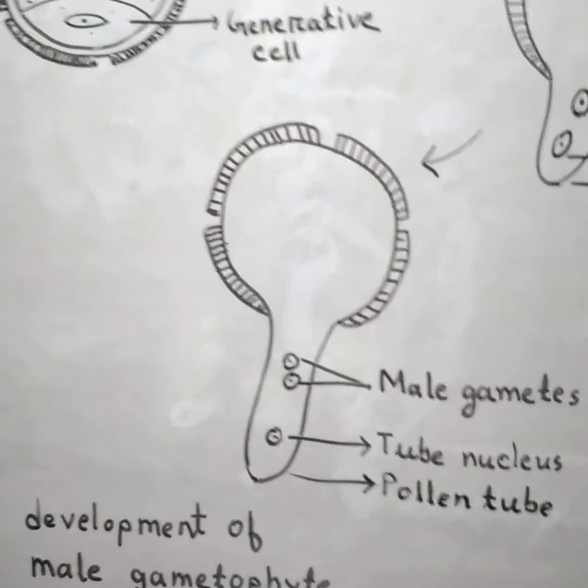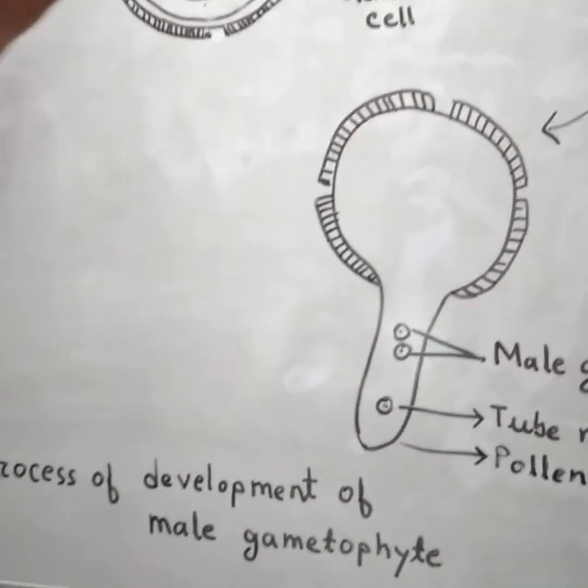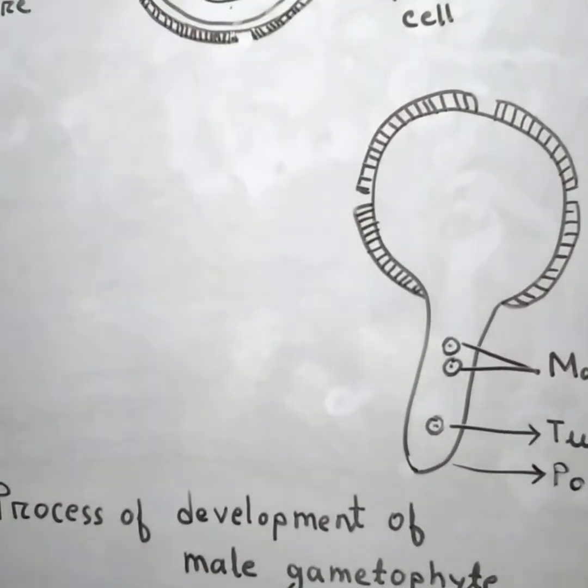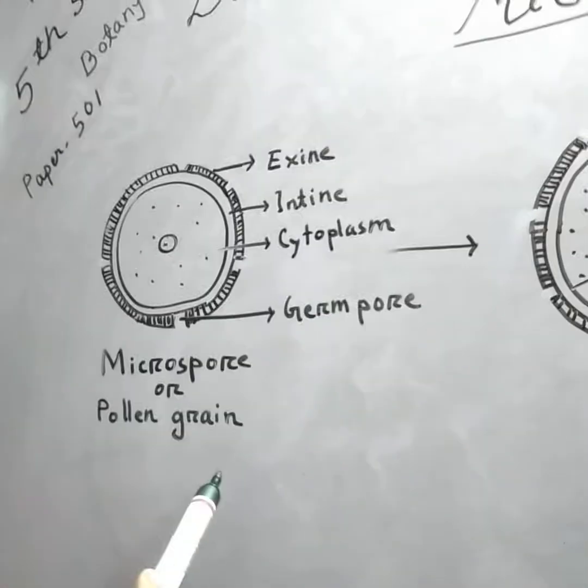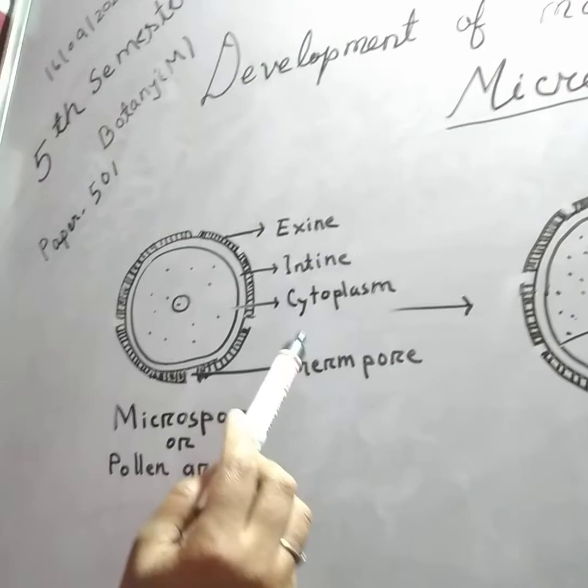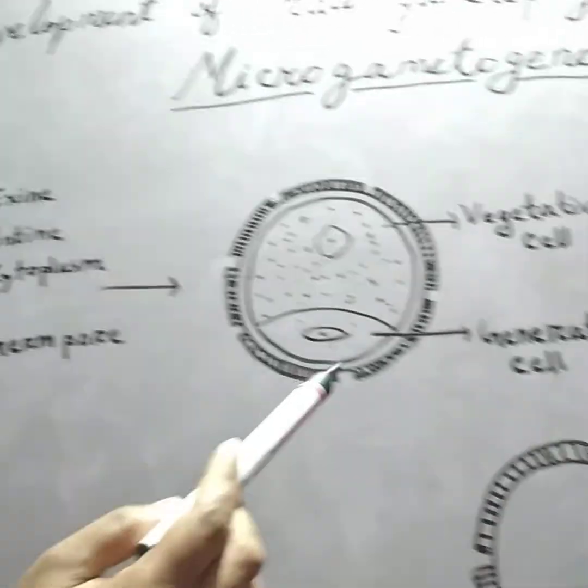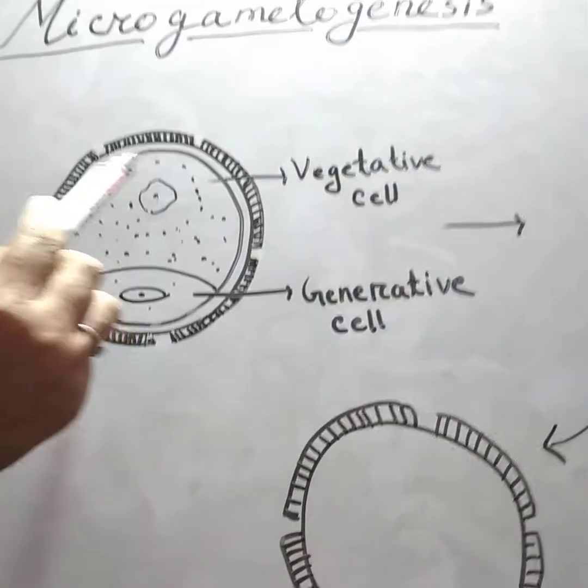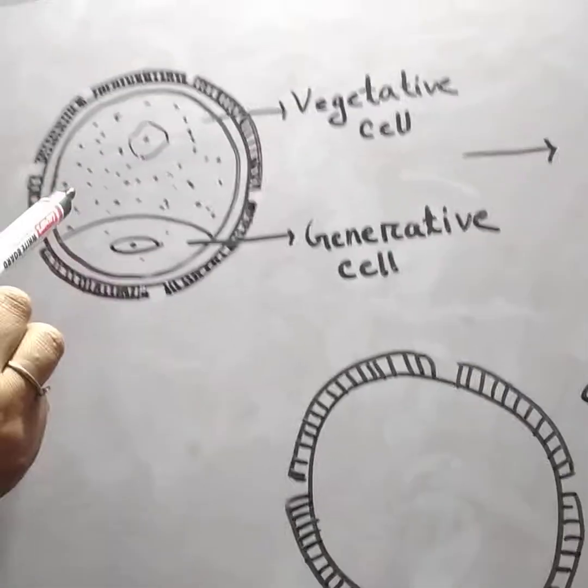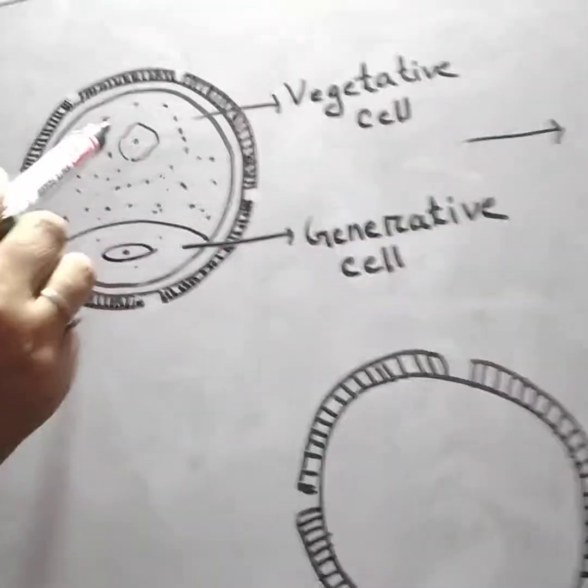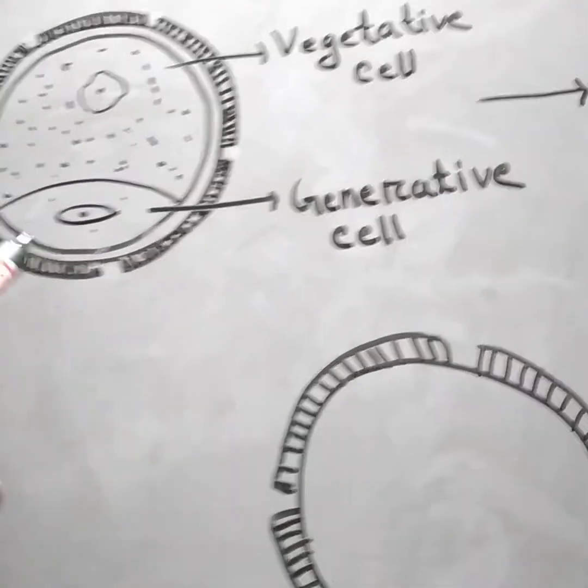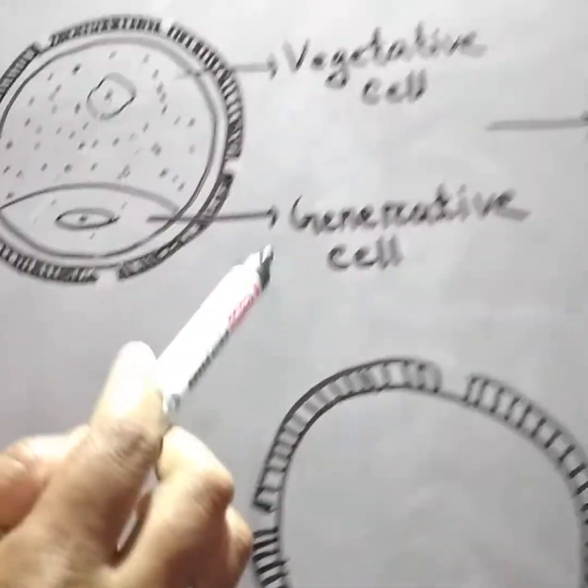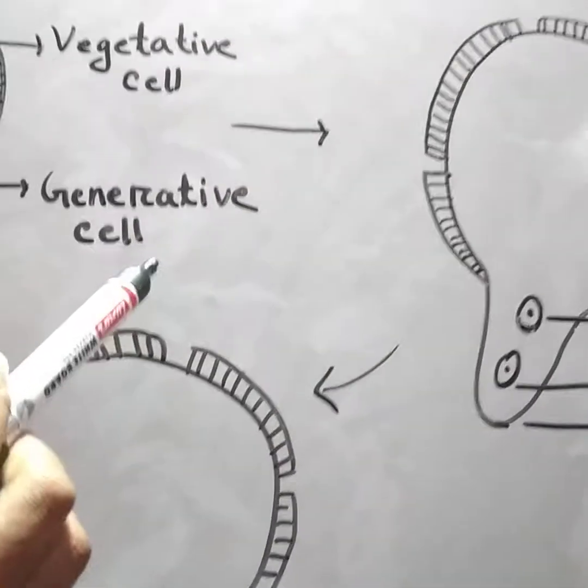This is the process known as microgametogenesis. First cell, microspore or pollen grain, divided into two cells: one is larger with abundant cytoplasm and irregular nucleus, and the other one smaller, known as generative cell.